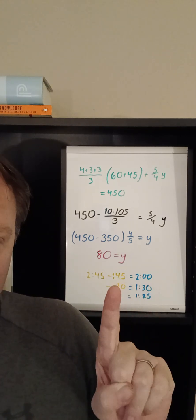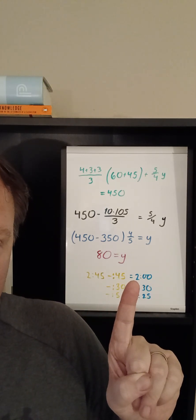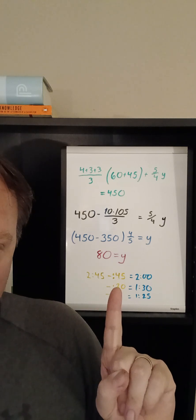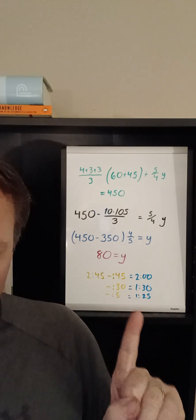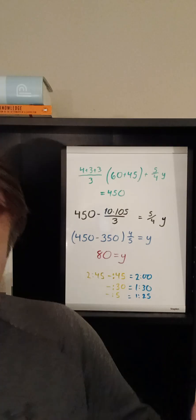So the way that I'm trying to compute this quickly is let's take away 45. That gets us down to two o'clock. Then let's take away another 30. So we're at 1:30. Let's take away the remaining five. It's 1:25 is when Daria joined.